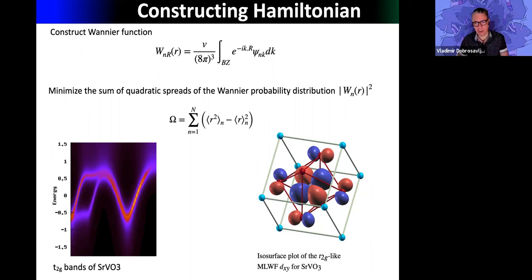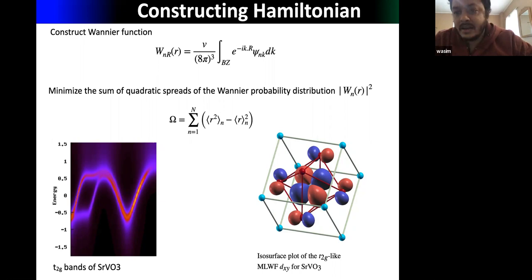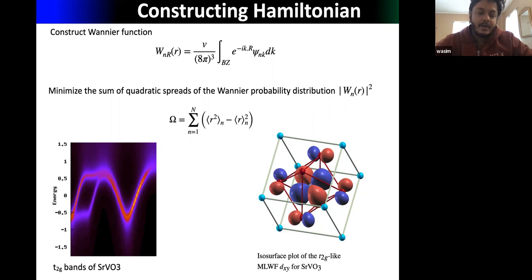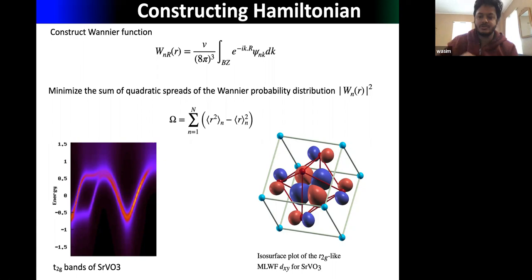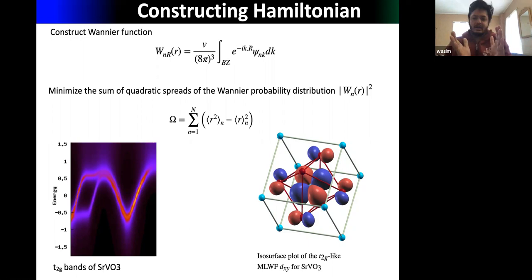This is Vanderbilt's method, first developed by Vanderbilt. We show the interpolated band structure in the Wannier function basis: we have successfully extracted the three t₂g bands. We pass this information to the DMFT code. The Wannier function for one orbital clearly shows the d-orbital shape.